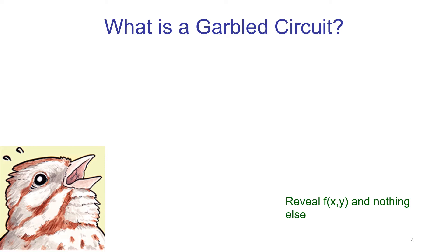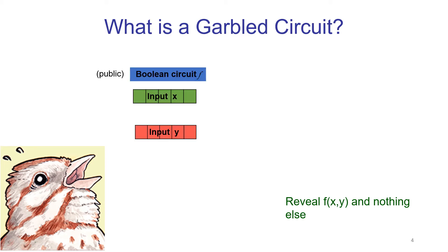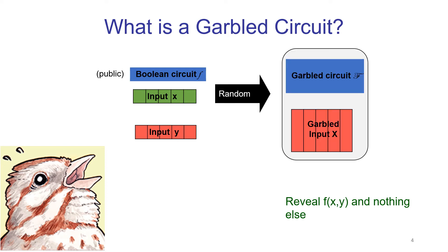Just to tie everything together, the two parties want to reveal f of x and y, and nothing else. So the inputs are this public boolean circuit little f, the input x which belongs to the garbler, and the input y. The garbling is then done and you get a garbled circuit and a garbled input. Usually we assume that the garbler is going to hard-code her input into the garbled circuit, so the only input into the circuit is the one from the evaluator.